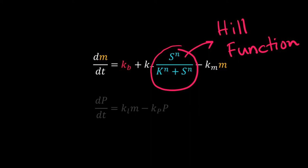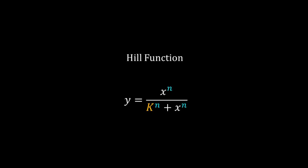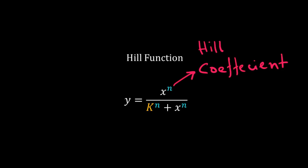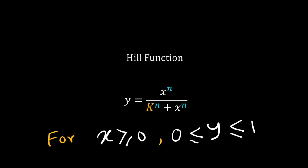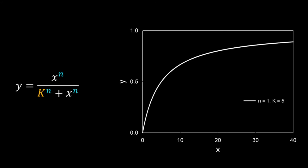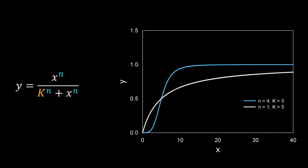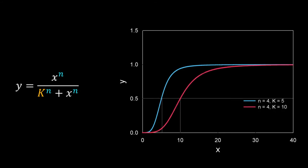The Hill function is widely used to capture the threshold or sigmoidal behavior observed in many systems with cooperativity. We know transcription factors have cooperativity. The general form of the Hill function is: y equals x to the power n, divided by k to the power n plus x to the power n. Here n is the Hill coefficient and k is the Hill constant. For x greater than or equal to 0, y varies between 0 and 1. The Hill coefficient is a measure of cooperativity: when n equals 1 we get a rectangular hyperbola, when n is greater than 1 we get a sigmoid, and when n is very high the sigmoidal curve becomes very sharp and behaves like a switch. The Hill constant k determines the value of x for which y is half-saturated.